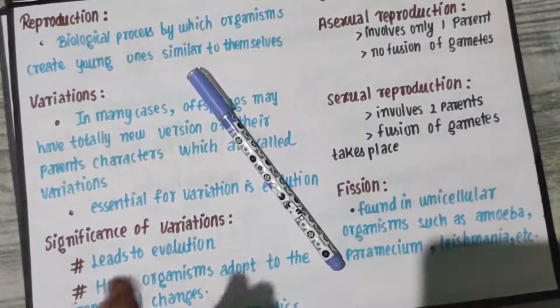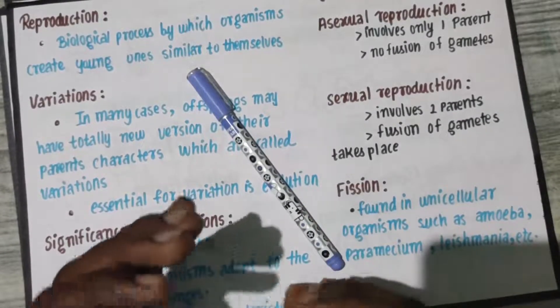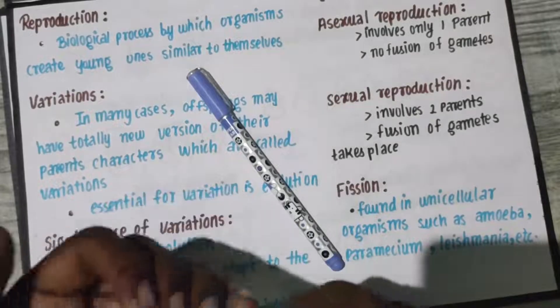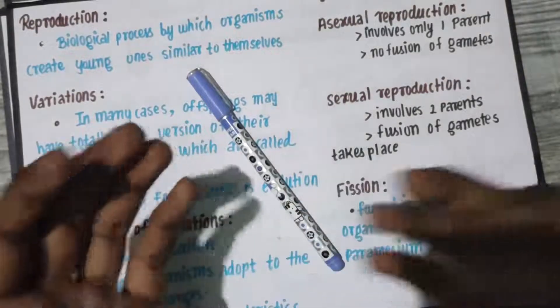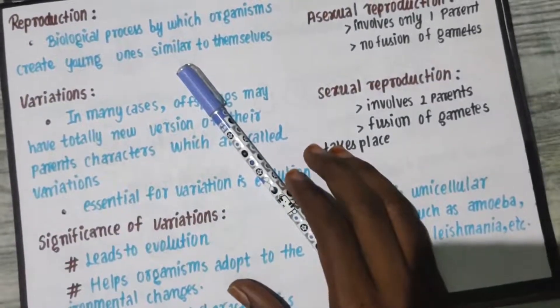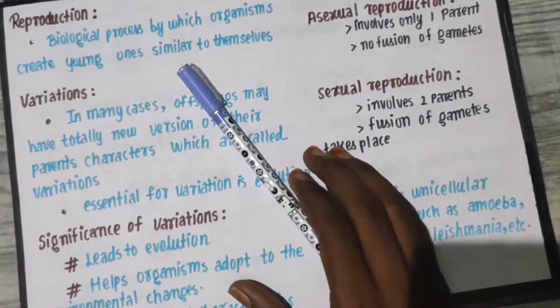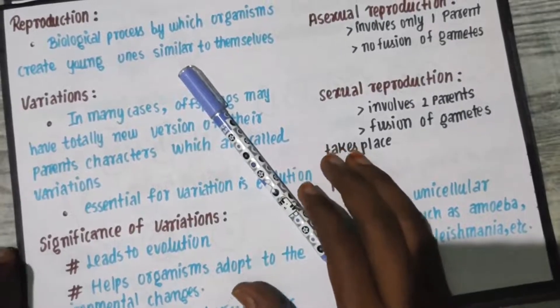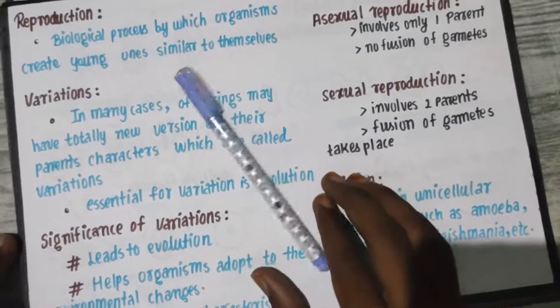So in the case of a cat or kitty, it is going to be similar to a cat only — it is not going to be a dog. So in this case, young ones are created through the process of reproduction.